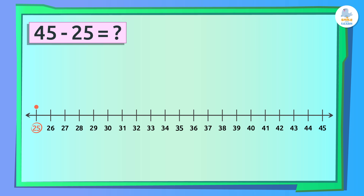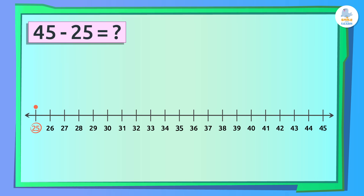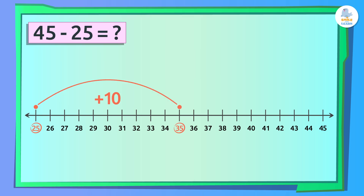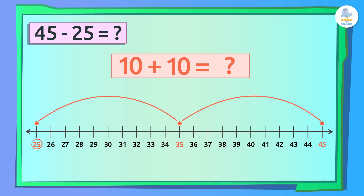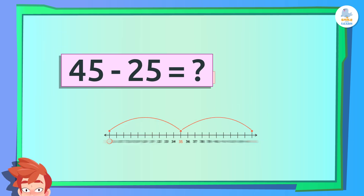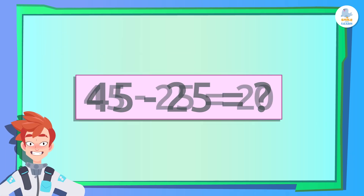We start at 25. Now, we're going to jump forward until we get to 45. Each jump represents a unit. We start at 25 and jump 10 to get to 35. Another jump of 10 takes us to 45. As we jump, we're solving our subtraction problem, because the number of lines between 45 and 25 is the answer. Here we have jumped 20, which means that 45 minus 25 equals 20.